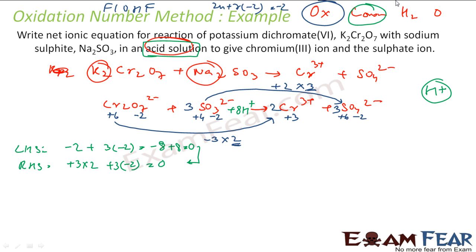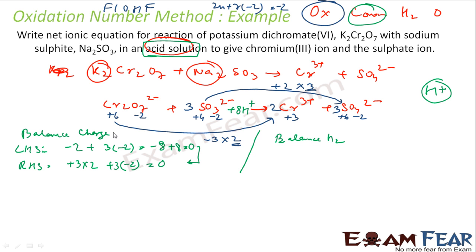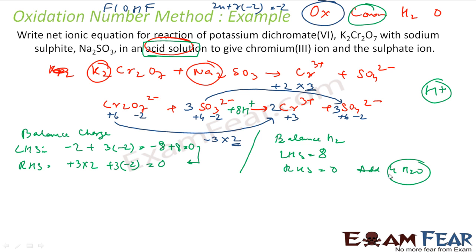The next step is to balance hydrogen. In the LHS I now have 8 hydrogens from the 8H⁺. In the RHS I have 0 hydrogens. To balance hydrogen, I add 4H₂O molecules to the right-hand side. Now hydrogen is balanced.